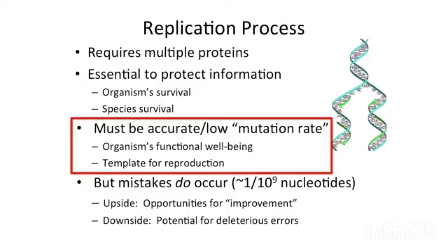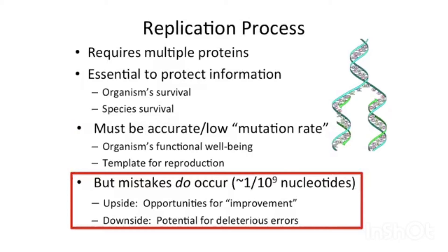And, as mentioned before, this DNA is the template for reproduction. Even so, mistakes do occur about 1 in 10 to the 9th nucleotides — that is, a DNA that is 10 to the 9th nucleotides long will probably have at least one error. But mistakes have an upside in that they are opportunities for improvement. A single base pair change in a segment of DNA that encodes a protein might result in enhanced function of that protein, giving the organism an advantage.